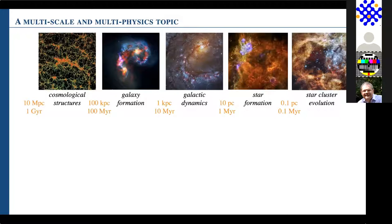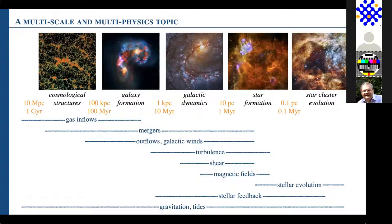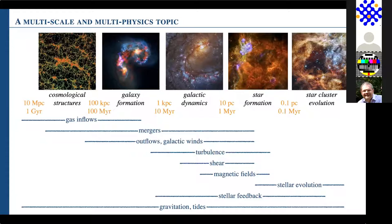This is almost the definition of a multi-scale and multi-physics topic. Starting from larger cosmological structure down to the smallest objects like star clusters, I give orders of magnitude for timescales and spatial scales. The most important physical processes active at these scales include: gas inflows from large-scale cosmology, galaxy mergers, outflows and galactic winds, turbulence of the gas — which is incredibly important — shear, magnetic fields, stellar evolution, stellar feedback, and at almost all scales gravity and tides play a very important role.